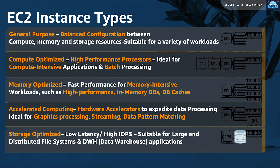The remaining instance types do have something special about them. The next type is known as the compute-optimized type. This type offers high-performance processors and a high CPU-to-memory ratio, making it ideal for compute-intensive applications and batch-processing workloads.